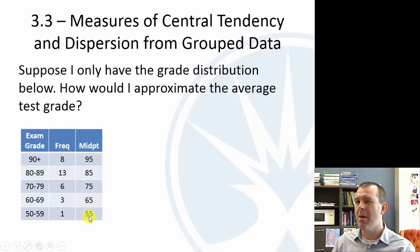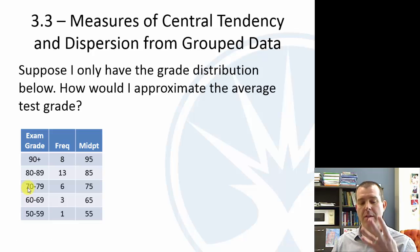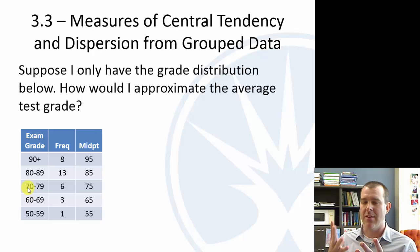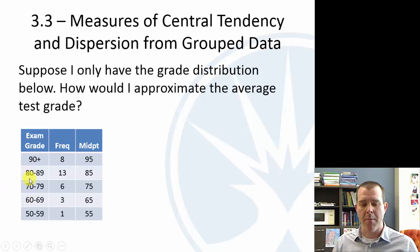This approach is really better for continuous data. For exam scores specifically, I would argue you should probably use 74 rather than 75, because the integers 70 through 79 give a midpoint of 74 or 74.5. It's an approximation either way. Your textbook recommends averaging the two adjacent lower class limits.